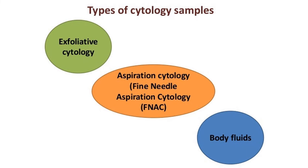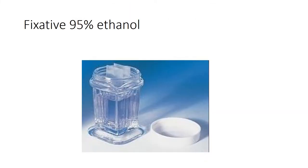There are types of cytology samples: exfoliative cytology, fine needle aspiration cytology (FNAC), and body fluids. Exfoliative cytology — usually pap smears and sputum slides — are made by clinicians. For pap smears, always use 95% ethanol as a fixative, which should be available when taking the smear. The slide should be immediately immersed in the fixative; otherwise drying artifacts lead to misdiagnosis and misinterpretation. Also make thin smears, as thick smears are rejected.